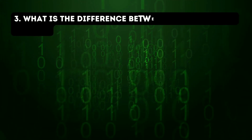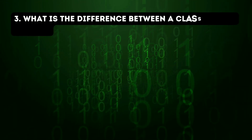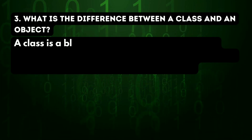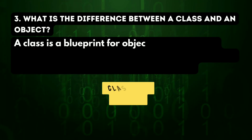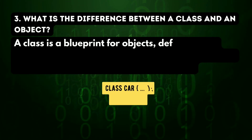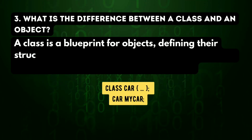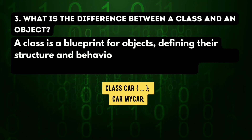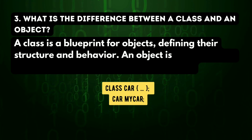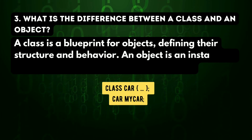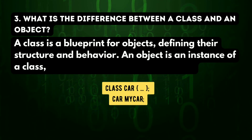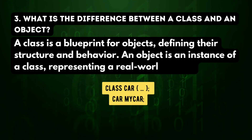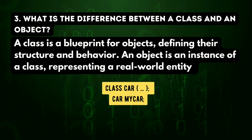Question 3: what is the difference between a class and an object? A class is a blueprint for objects defining their structure and behavior. An object is an instance of a class representing a real-world entity.